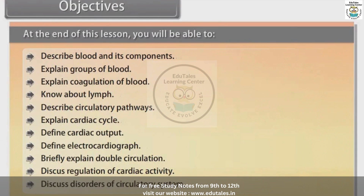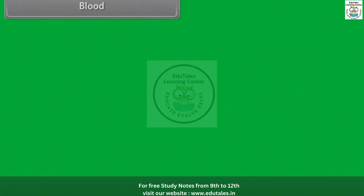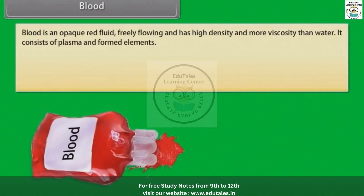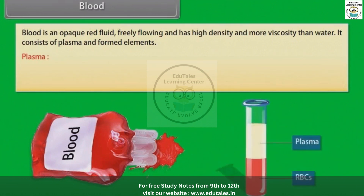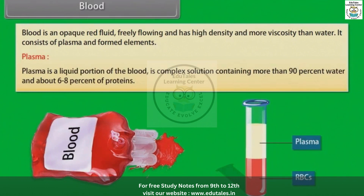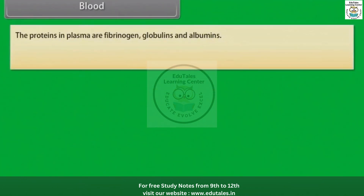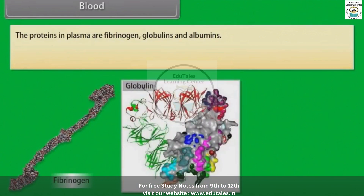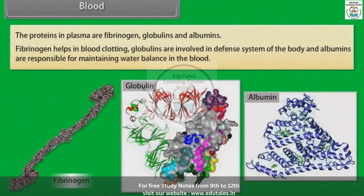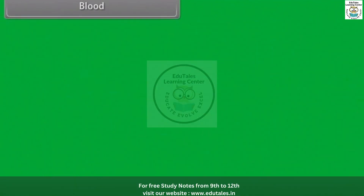Blood is an opaque red fluid, freely flowing, and has high density and more viscosity than water. It consists of plasma and formed elements. Plasma is the liquid portion of the blood. It is a complex solution containing more than 90% water and about 6–8% proteins. The proteins in plasma are fibrinogen, globulins, and albumins.